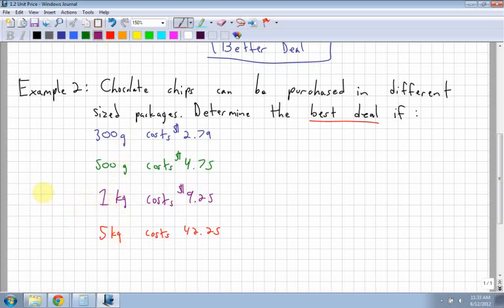Well, first of all, let's figure out how many grams are in 1 kilogram. How many grams are in 1 kilogram? 1,000. That means for this one, for 5 kilograms, it's going to be 5,000 grams.